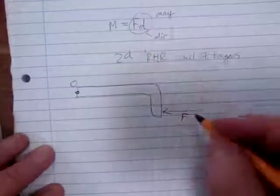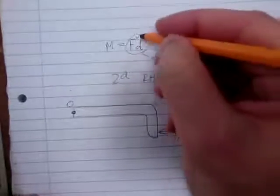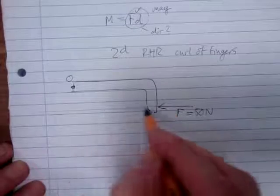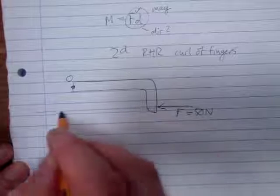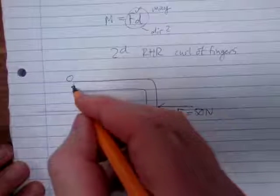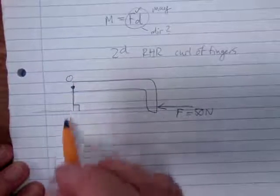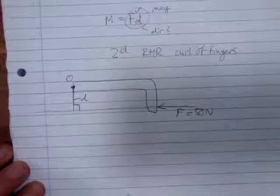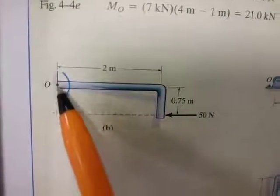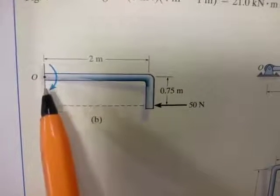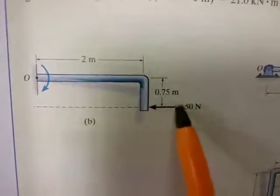The force is given as 50 N. Extend the line of action and from point O draw a perpendicular to it — there is our D, which equals 0.75 m. So the magnitude of the moment is 50 times 0.75.